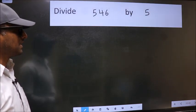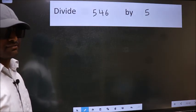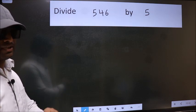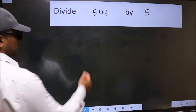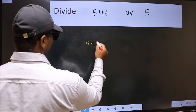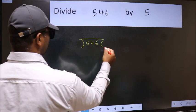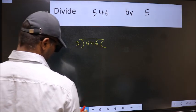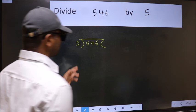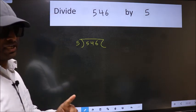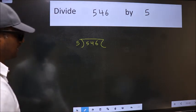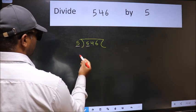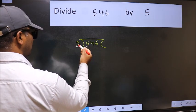Divide 546 by 5. To do this division we should frame it in this way: 546 here and 5 here. This is your step 1. Next, here we have 5 and here also 5. When do we get 5?